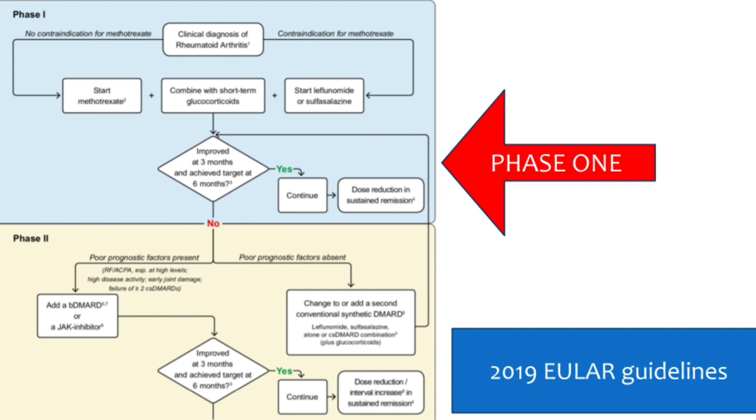One can also use DMARD combination with glucocorticoids. The classic O'Dell regime combines methotrexate, sulfasalazine, and hydroxychloroquine. There was a trial called the COBRA trial by Désirée van der Heide using methotrexate, sulfasalazine, hydroxychloroquine with steroids, and those patients did very well — showing a step-down approach is also possible. These are the EULAR guidelines.